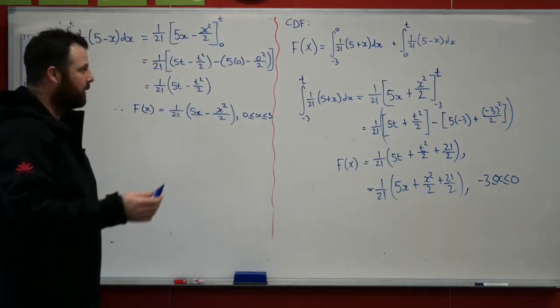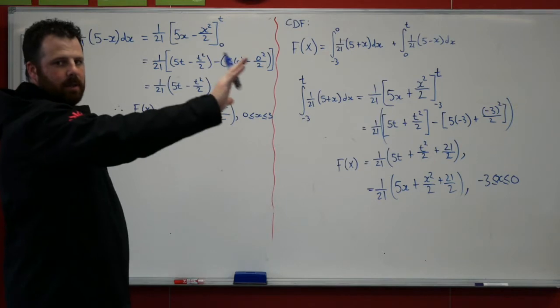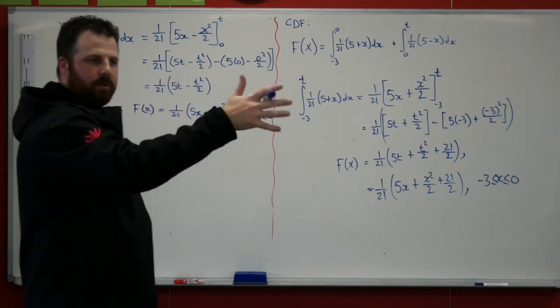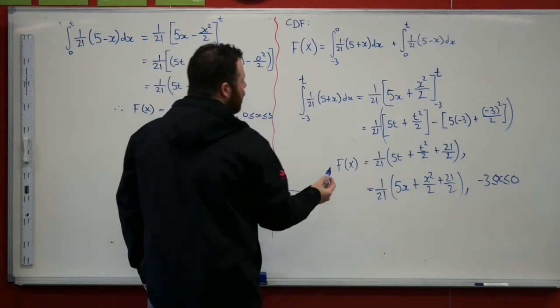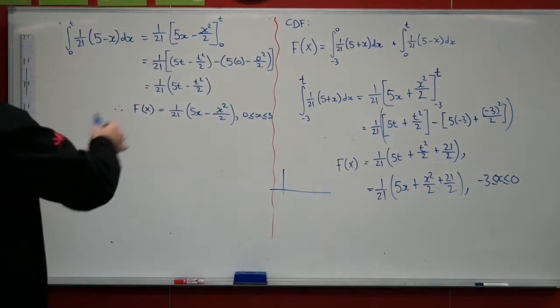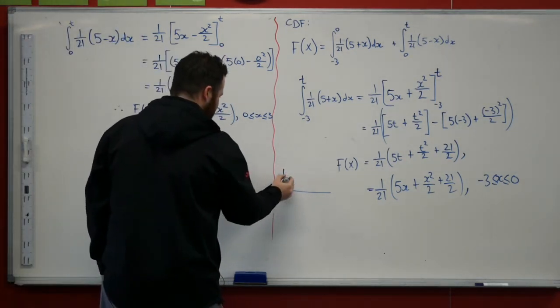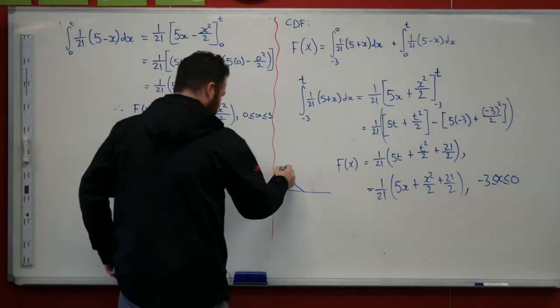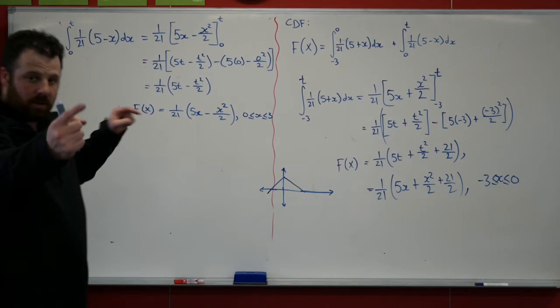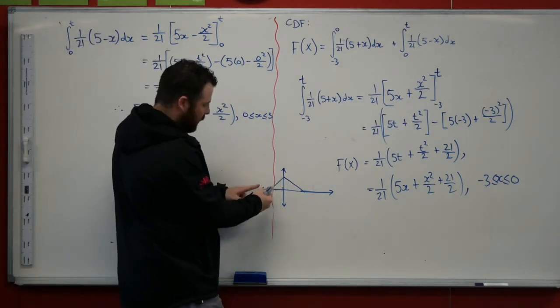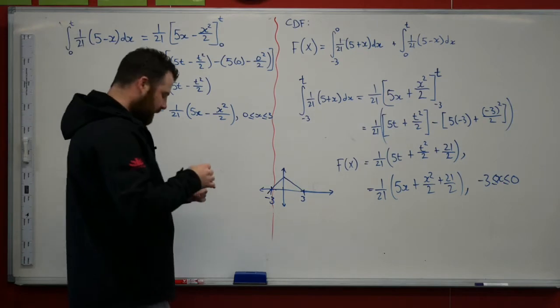So what we have when we go through this is that if my t value is in that second part of my piecewise function, if I'm looking for a value in that second part of my piecewise function, let's just quickly draw something. We've got the first part between minus 3 and 0 is x plus 5, and then the second part. So what we have here is the function that we've got is there's our 5 plus x between minus 3 and 0.